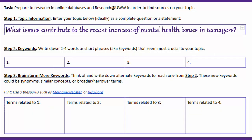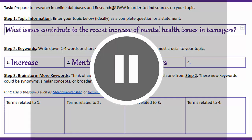Next, it's not really a great idea to put your whole sentence or question into any library search tool. Instead, we want to pick out the most important concepts, or keywords. For my topic, my major keywords are "increase," "mental health," and "teenagers." If you want, pause this video now and jot down your keywords or main ideas under Step 2.